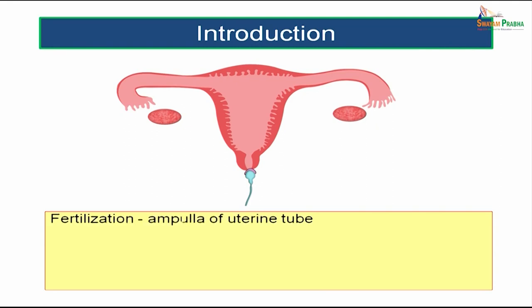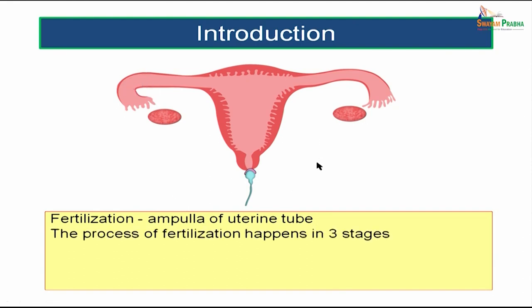Let us move on to the topic of fertilization. The site of fertilization is the ampulla of the uterine tube. The uterine tube has four parts: the interstitial part, the isthmus, the ampulla, and the infundibulum. Fertilization actually happens at the ampulla, and the process occurs in three main stages.